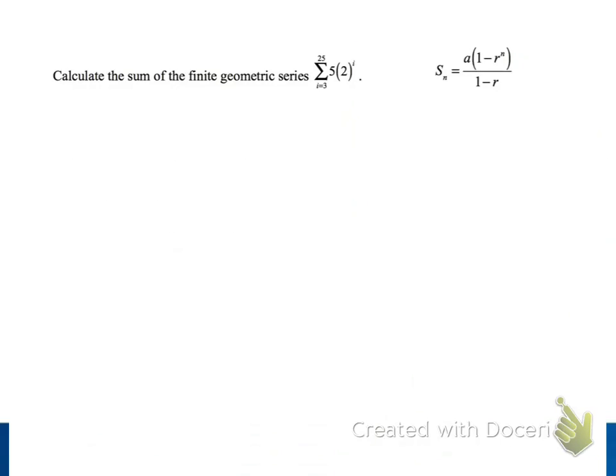So here we see an example, and it's a series because we are adding up the terms of a sequence. It's a geometric series because the ratio of consecutive terms in the sequence is always the same, which we'll see later on in this screencast. And it is a finite geometric series because we are only adding a finite number of terms.